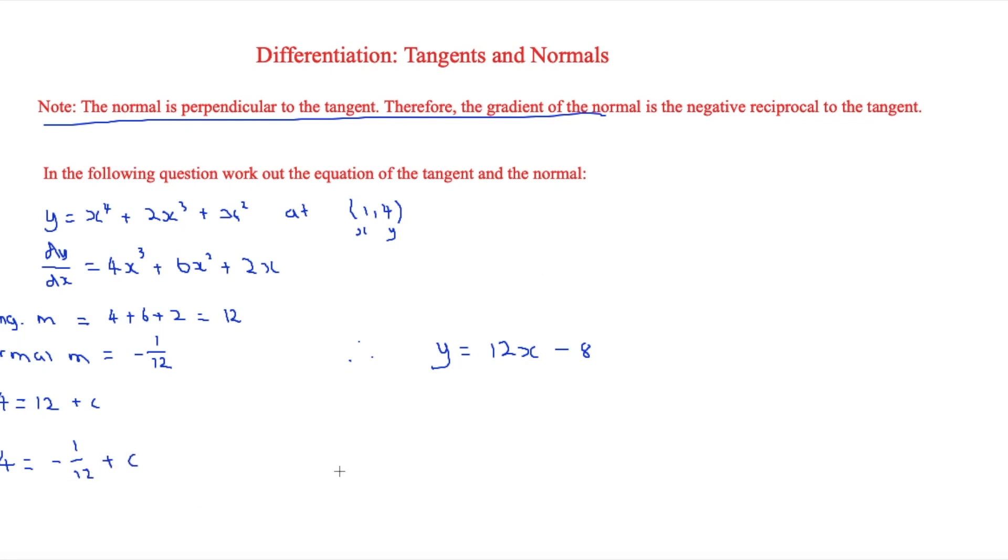Therefore, if we added the 1/12 from both sides, then we know that c is going to be equal to 49 over 12. And we'll keep it in a fraction instead of putting in a decimal because that's more accurate.